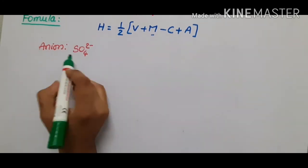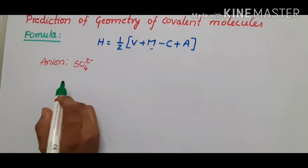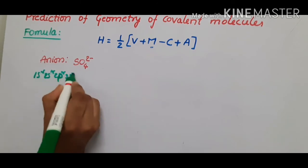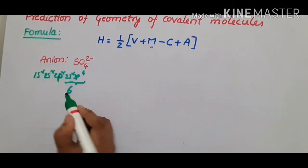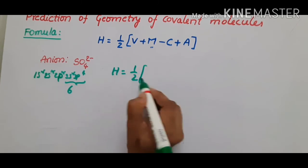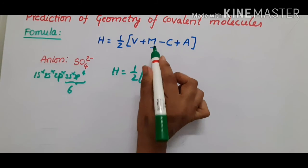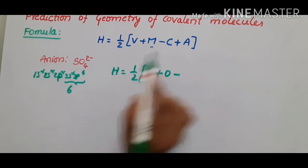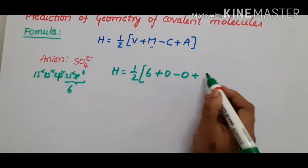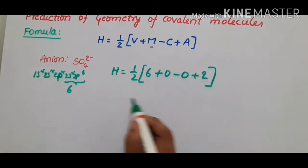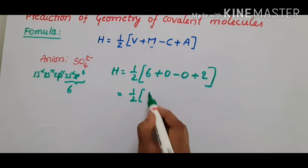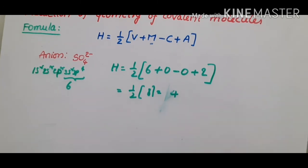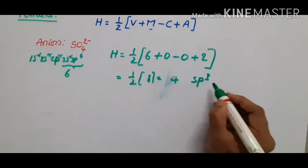For an anion example, consider SO₄²⁻. The central atom is sulfur with configuration 1s² 2s² 2p⁶ 3s² 3p⁴, giving 6 valence electrons. H = ½(6 + 0 - 0 + 2) = 8/2 = 4. Oxygen atoms are divalent so M = 0, the cation charge is zero, and the anion charge is 2. H = 4 gives sp3 hybridization and tetrahedral geometry.